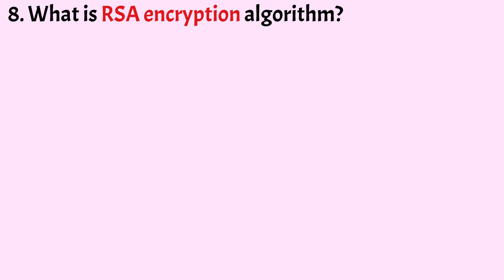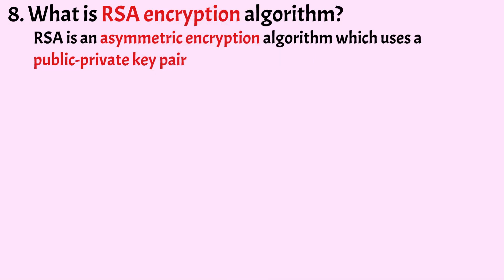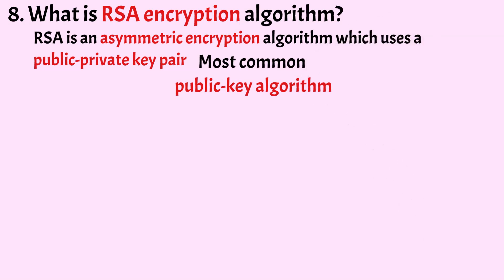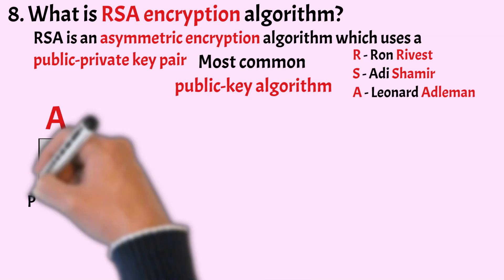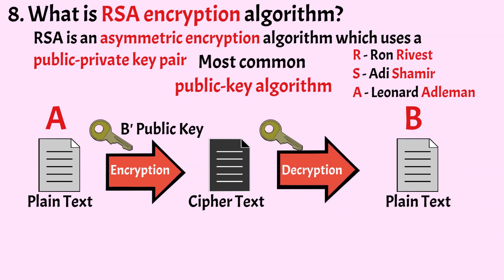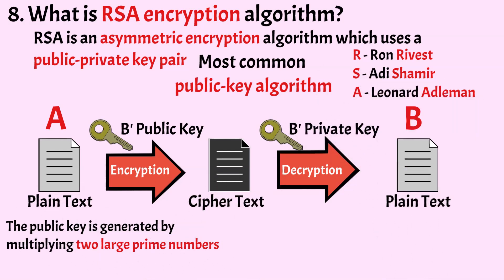What is the RSA encryption algorithm? RSA is an asymmetric encryption algorithm which uses a public-private key pair. It is the most common public key algorithm, named after those who invented it. In this algorithm, the sender and receiver use different keys for encryption and decryption, and there is no need to exchange a secret key separately. We can use RSA for both public key encryption and digital signatures — RSA can also be used to sign a message. The public key is generated by multiplying two large prime numbers.